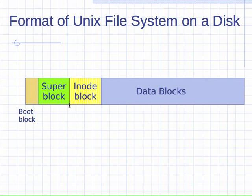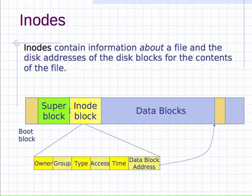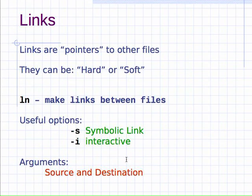This structure is used across most operating systems — macOS, Linux, Unix, and Windows use very similar structures. Inodes contain information about a particular file and the disk addresses of the data blocks for that file's contents. The information in an inode includes the file owner, the group associated with the file, the type of file, the access time, the modification time, the permissions, and finally a pointer to the blocks where the actual data is stored.